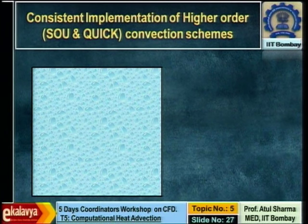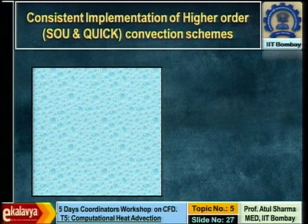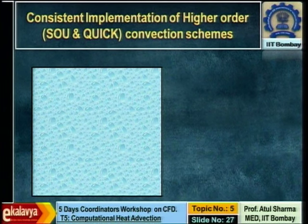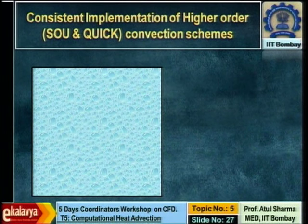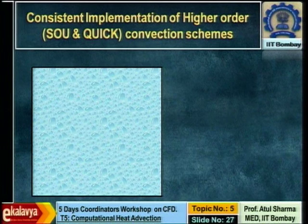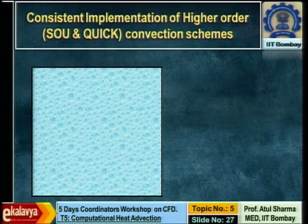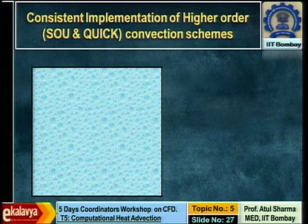There are two levels of approximation. For advection, the first level is surface averaging to represent the advection flux; the second level is the advection scheme. Higher-order schemes like second-order upwind and QUICK give more accurate results, especially at high Reynolds numbers, but convergence may be more difficult. At low Reynolds numbers, first-order upwind may be sufficient.